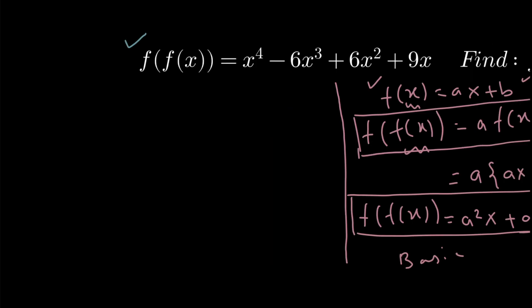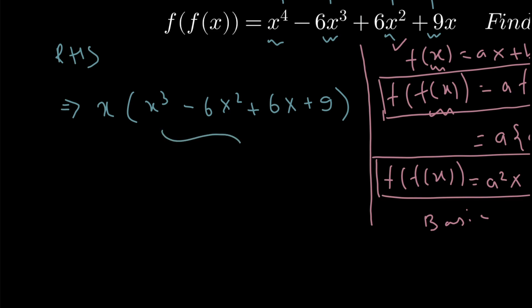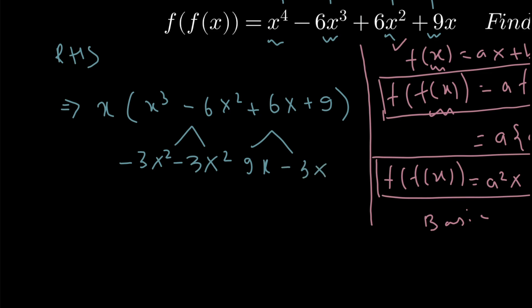Now let us begin with the solution of the problem. The first thing I will do is take the right-hand side and try to factorize it as much as possible. There are 4 terms present and all 4 contain the variable x, so I can take x common. Inside the bracket I will have x³ - 6x² + 6x + 9. This cubic expression inside the bracket — I will split -6x² as -3x² - 3x², and 6x as 9x - 3x.